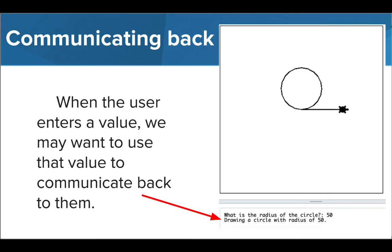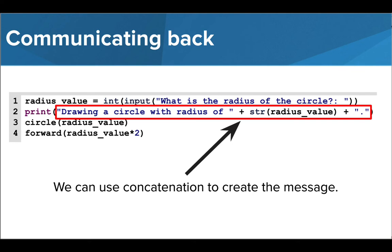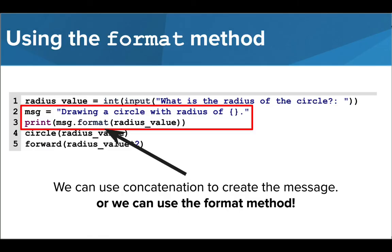We may want to send a message to communicate back to the user. This may be a personalized note with their name or a confirmation of the information they entered. To do this, we could print a message that includes the information they provided. To combine the pieces of information with our message, we could use concatenation, as we learned in the last few lessons. Or we can alter the message using the format method. Let's take a look at how this method works.